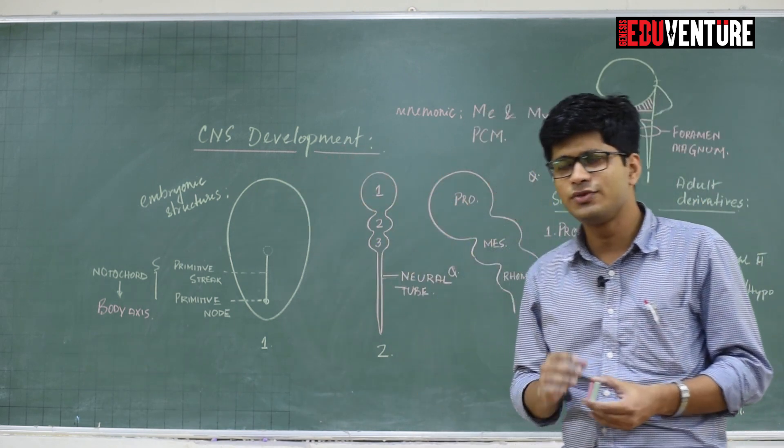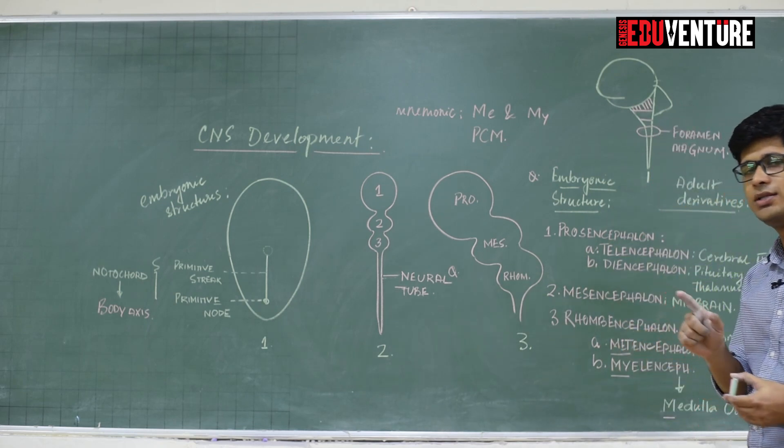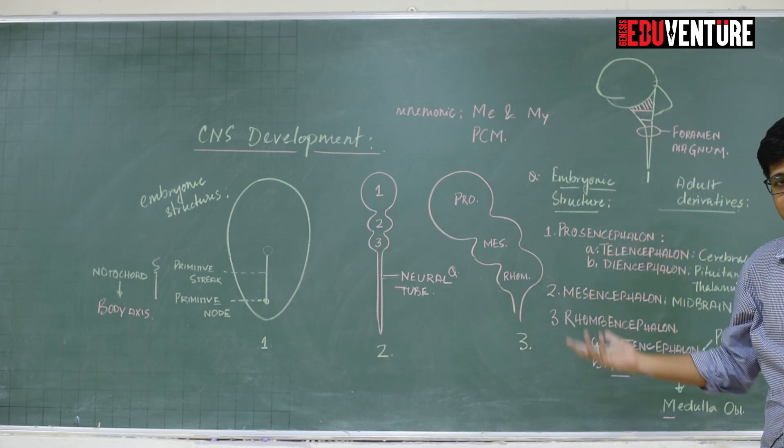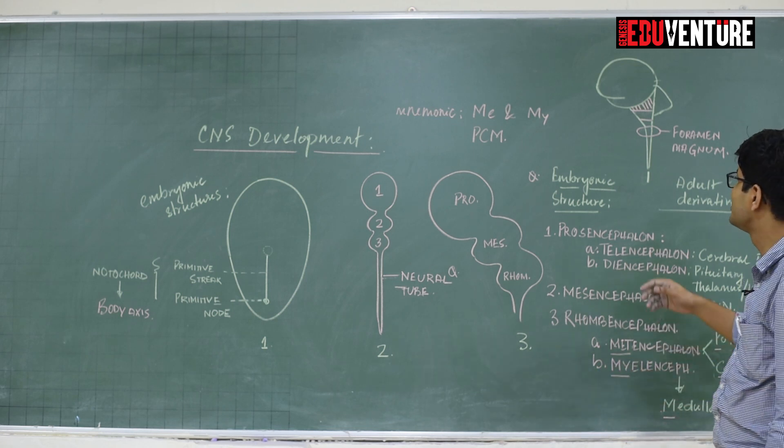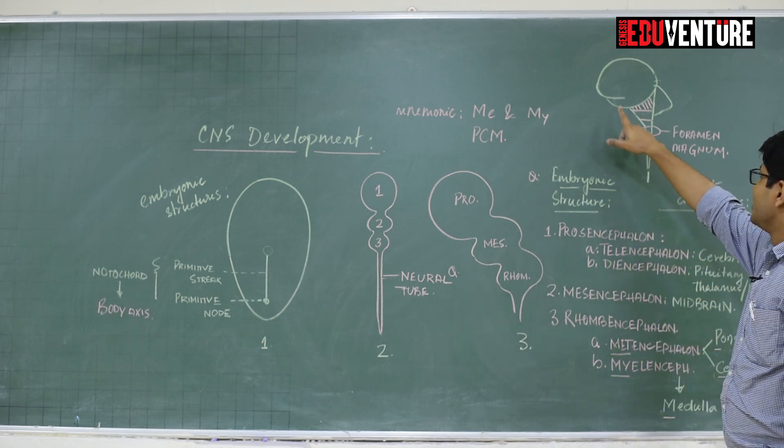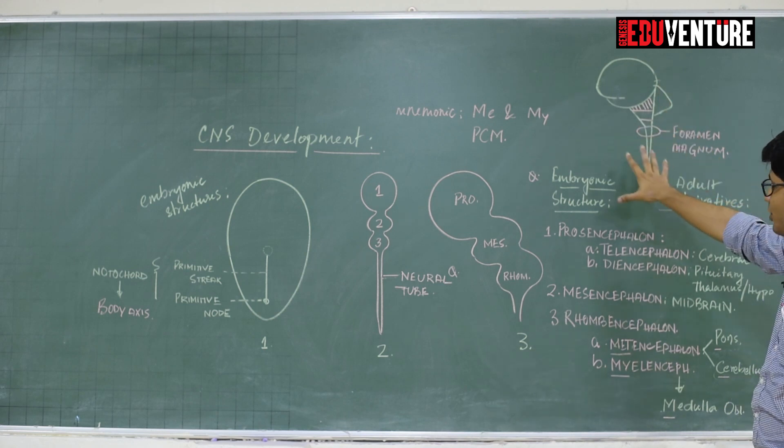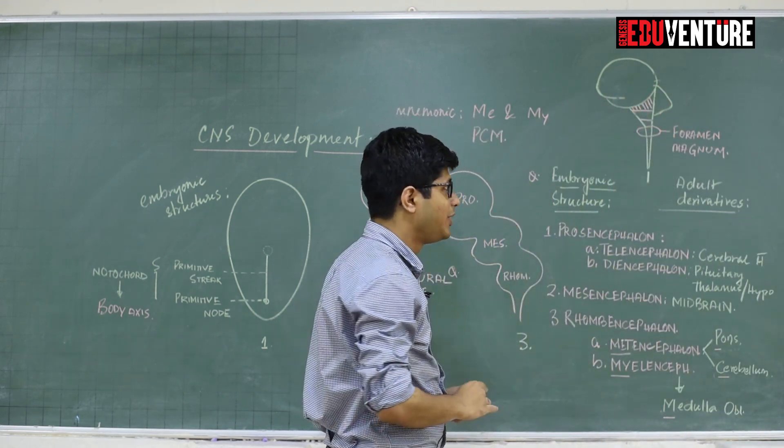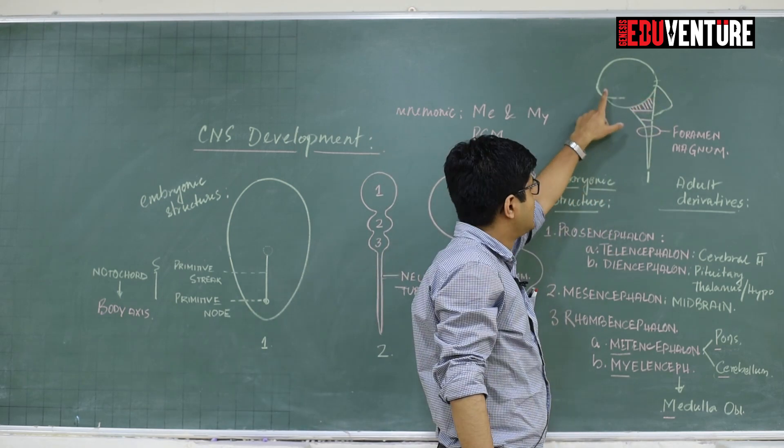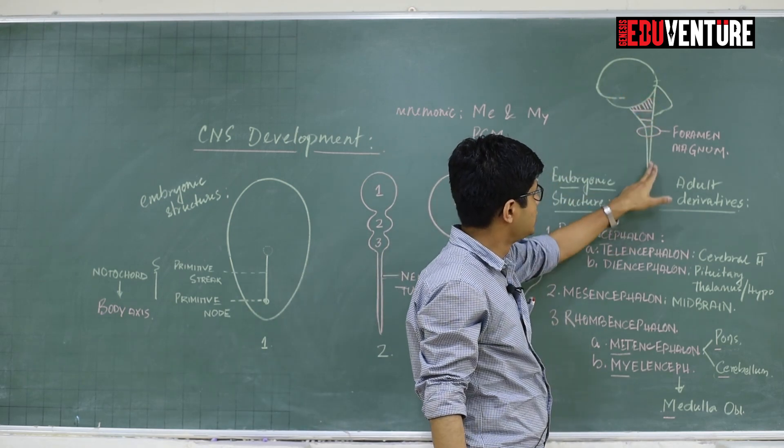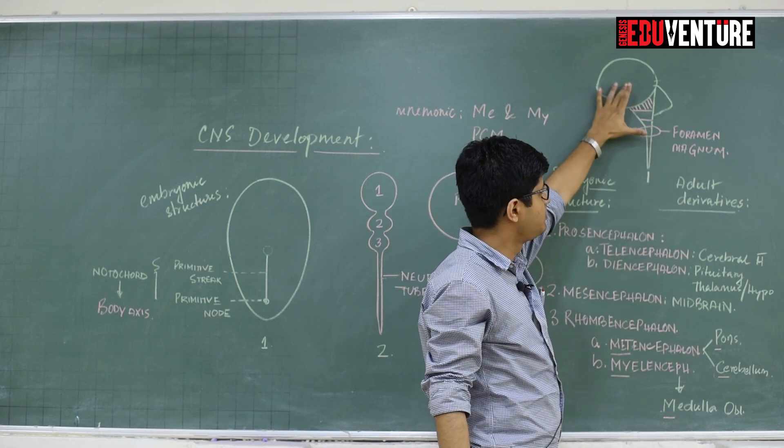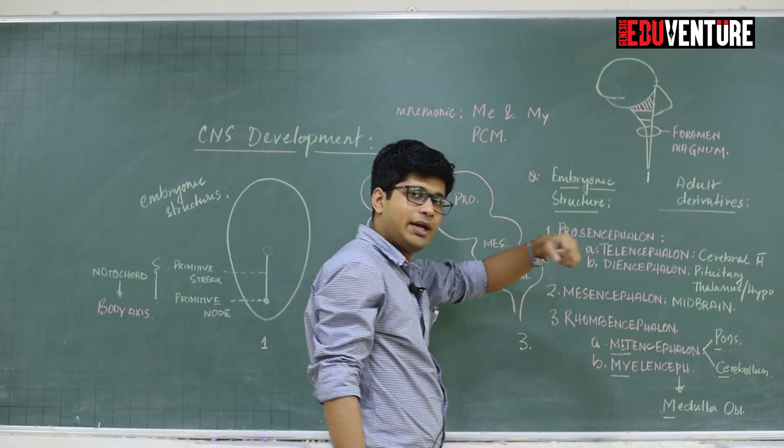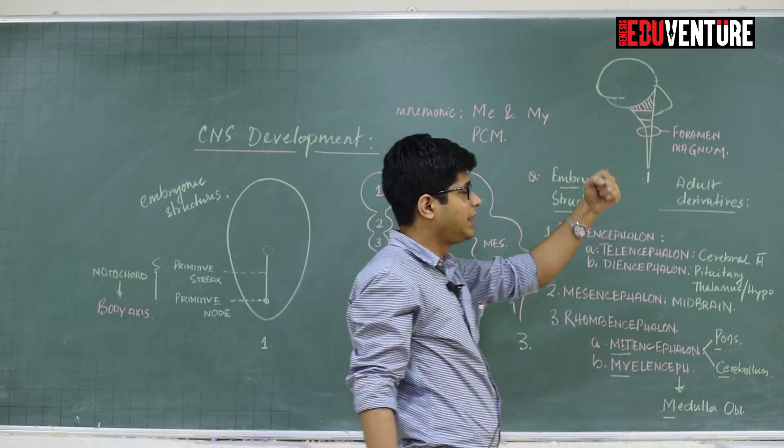Before starting with the embryonic structures, let us first review what parts form the central nervous system. We will start with the brain, the most interesting organ that human beings and other animals have. This is a schematic diagram. If you think this to be the brain, then this is the spinal cord. What is connecting the spinal cord with the brain? The brain stem, the stalk.